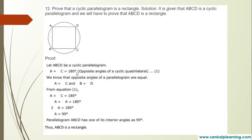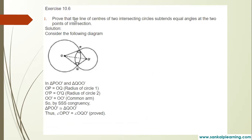Similarly, angle B plus angle D equals 180 — cyclic quadrilateral, and angle B equals angle D — parallelogram, so angle B equals 90 degrees. All angles are 90 degrees. Therefore parallelogram ABCD has all interior angles as 90 degrees, so it is a rectangle.